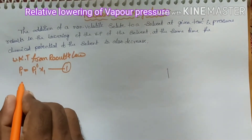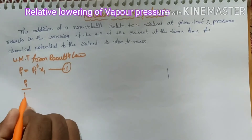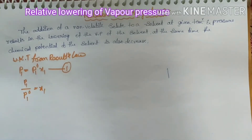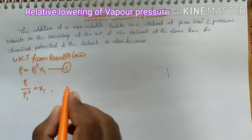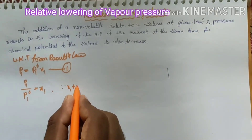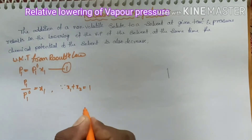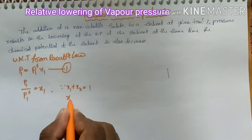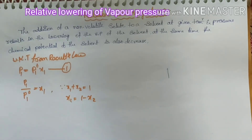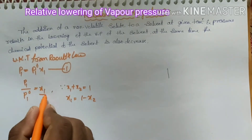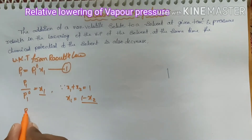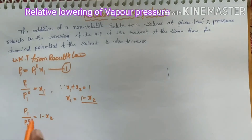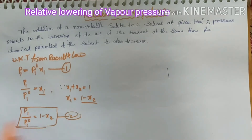From Raoult's Law, p₁ = p₁⁰ × x₁, therefore p₁/p₁⁰ = x₁. We also know that for a two-component solution, x₁ + x₂ = 1, so x₁ = 1 − x₂. Substituting, p₁/p₁⁰ = 1 − x₂, which gives p₁⁰ − p₁ divided by p₁⁰ = x₂. This is equation 2.